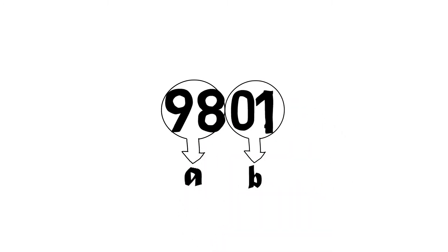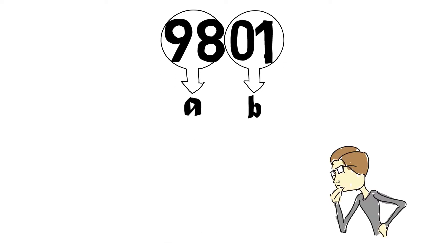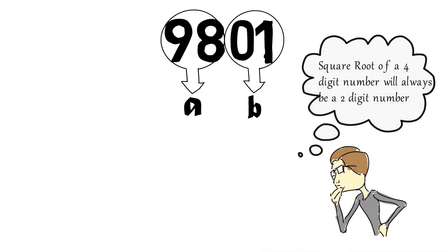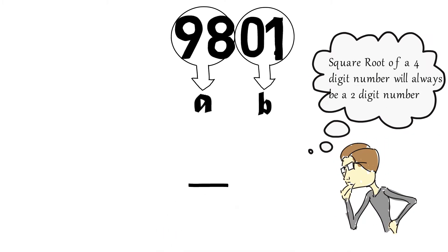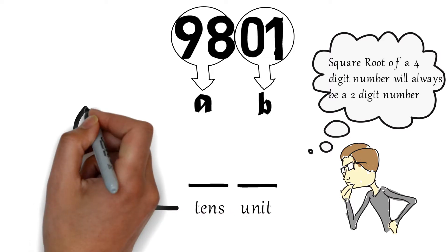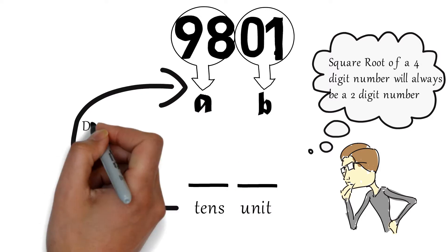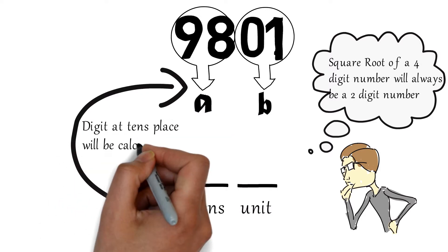Let us take a 4-digit number, let's say 9801. We will split this number into two portions: part a and part b. Again, the square root of a 4-digit number is also a 2-digit number. Part a will be used to calculate the digit at tens place and part b will be used to calculate the digit at units place.